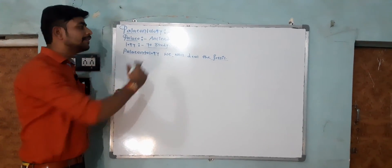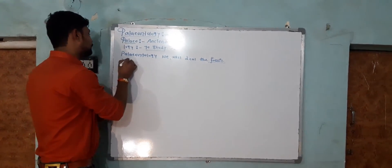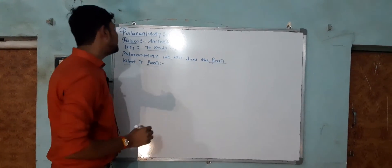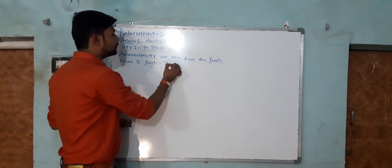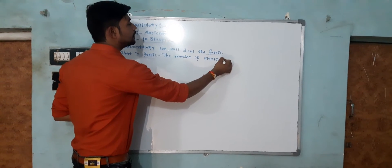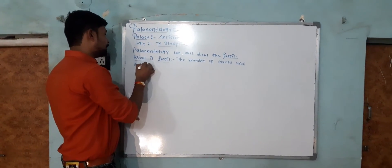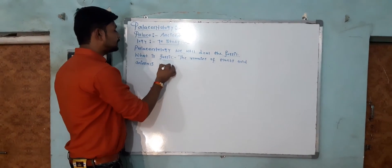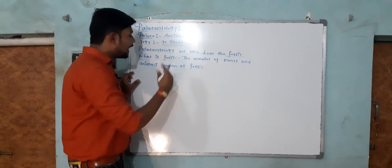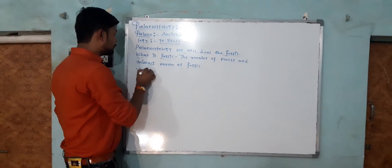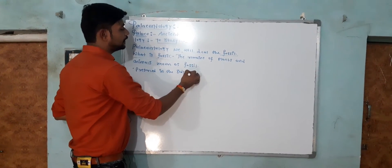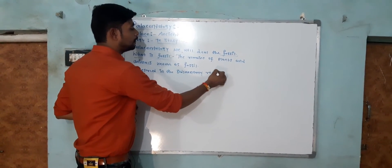So what is a fossil? A fossil may be defined as the remains of plants and animals. The remains of plants and animals are known as fossils, and these fossils are preserved in sedimentary rocks.